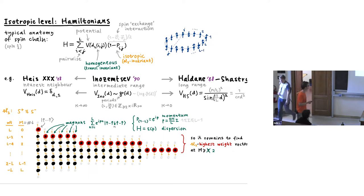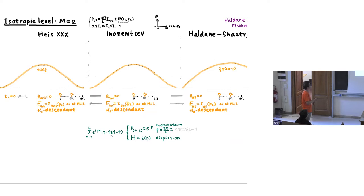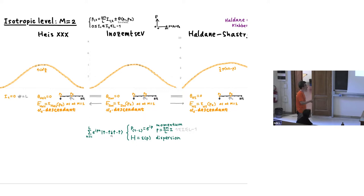Here I plotted the energy versus the momentum from 0 to 2π for three cases. At the Heisenberg point, the dispersion is the familiar sine-squared from the Bethe ansatz. For Innozemtsev at some intermediate κ, it is a more complicated elliptic function. For Haldane-Shastry, it becomes a beautiful parabola: one-half p(2π − p), vanishing at 0 and 2π. This is one of the first signs that something special is going on with Haldane-Shastry.